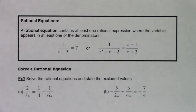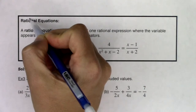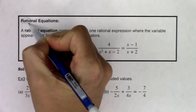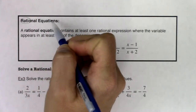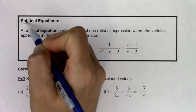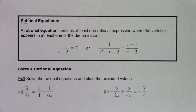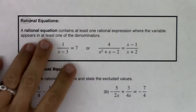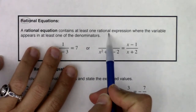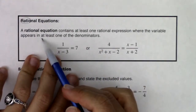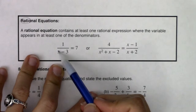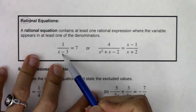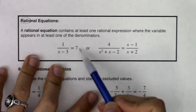Hey, Math 31. Let's take a look at rational equations. I mentioned this at the top of the section, but whenever you hear 'rational,' the word ratio is hiding in there. So when we hear rational equations, we're talking about equations where there are fractions. A rational equation contains at least one rational expression where the variable appears in at least one of the denominators. Here are a couple of examples — we have our variable in a denominator, so 1 over x minus 3 equals 7. This is a rational equation.